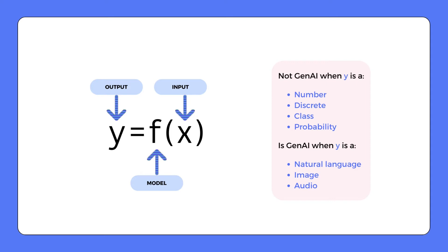The key here is understanding the nature of the output y as a function of inputs x. Traditional models generally produce numerical outcomes, while generative AI models can map those numerical values to different forms of information, making them able to generate complex responses such as natural language sentences, or images and videos.